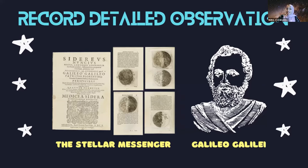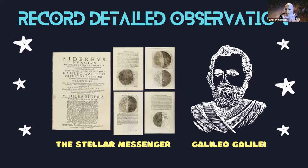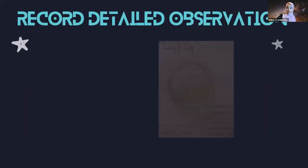This is a compilation of his drawings. Art is very significant in recording those observations. Just because you already observed something through a telescope doesn't mean everyone else will know about it. Not everyone has access to telescopes. So how do you represent it to other people? Back then, through drawings.